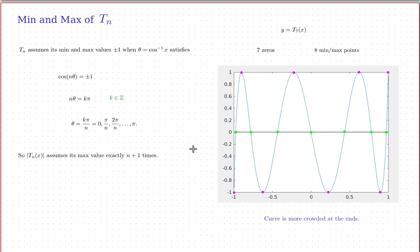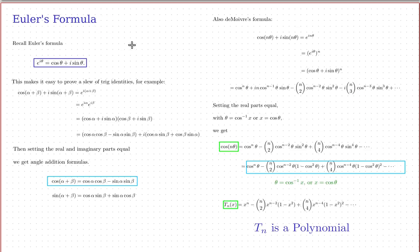Even though I have not yet proven that tn is a polynomial, it does behave just like a polynomial of degree seven — exactly seven zeros and six changes of direction. That's the way polynomials work. So let's prove that tn really is a polynomial. First let me review a little trigonometry using Euler's formula.